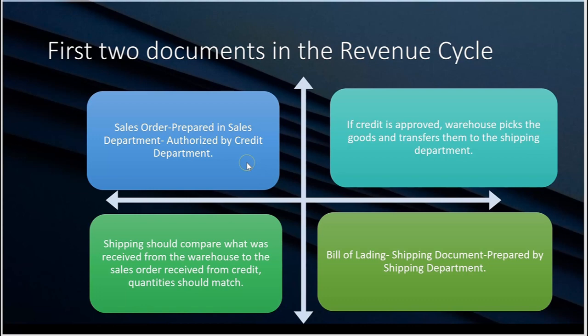That involves the credit department serving as authorization — if the customer has good credit. This should be a control: a company has a credit department whose authorization is needed, because if the customer is not on an approved list or doesn't have good credit, then the sales order should be shut down and goods should never be shipped unless the customer is paying in advance.